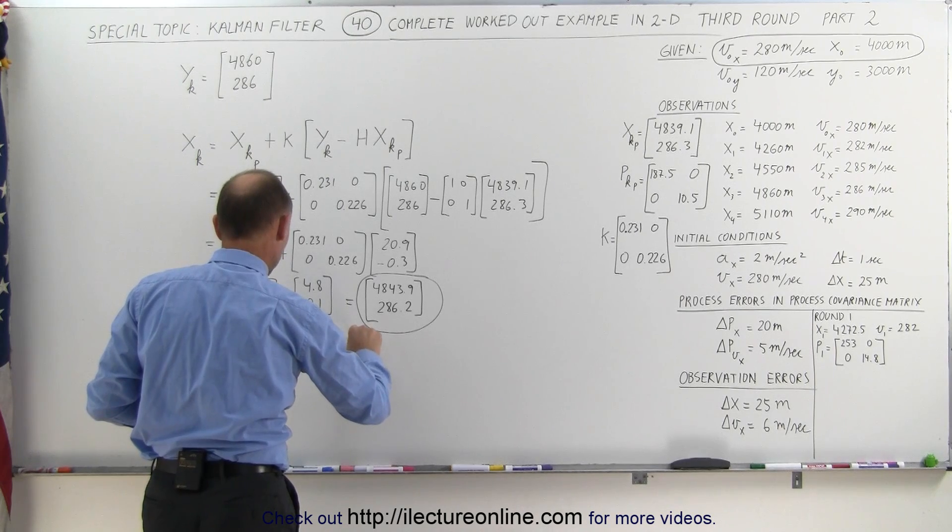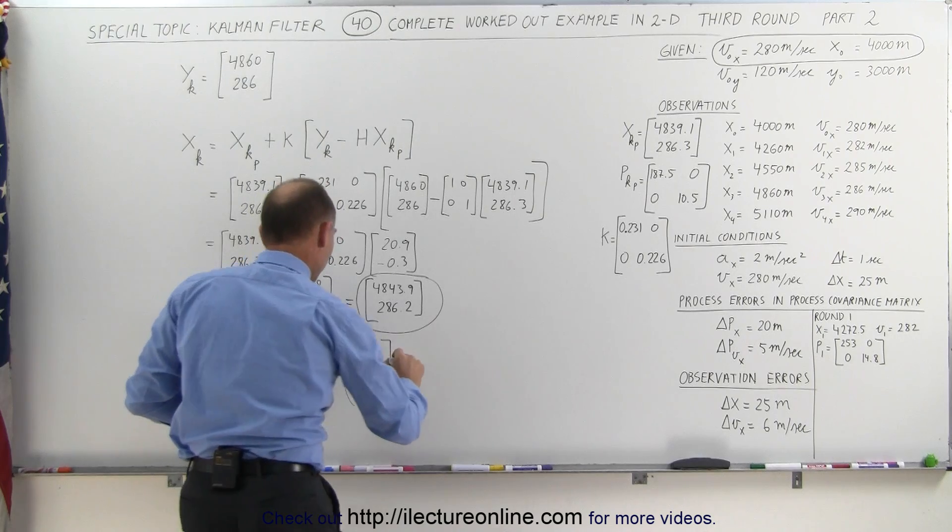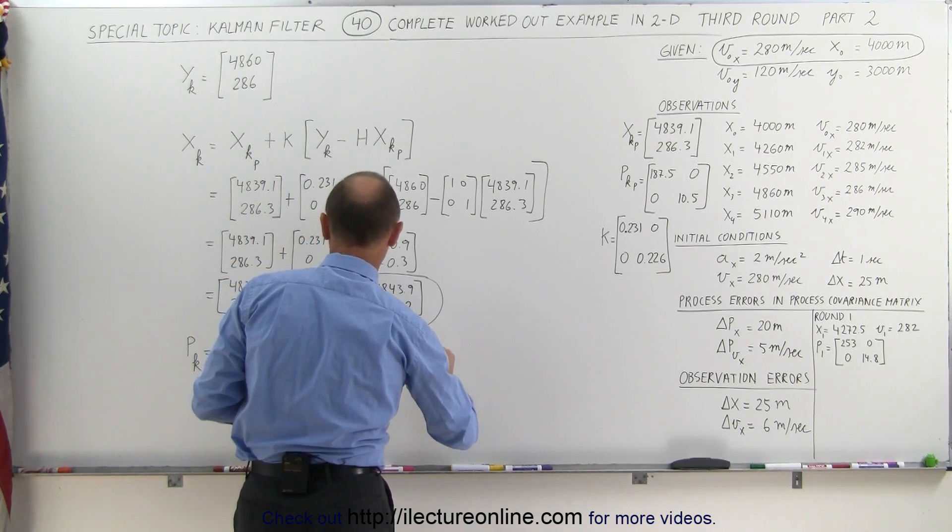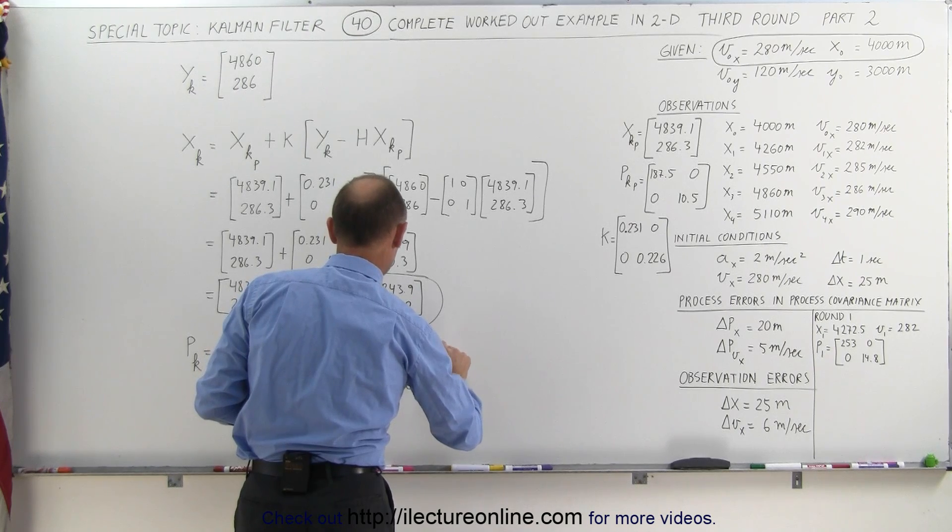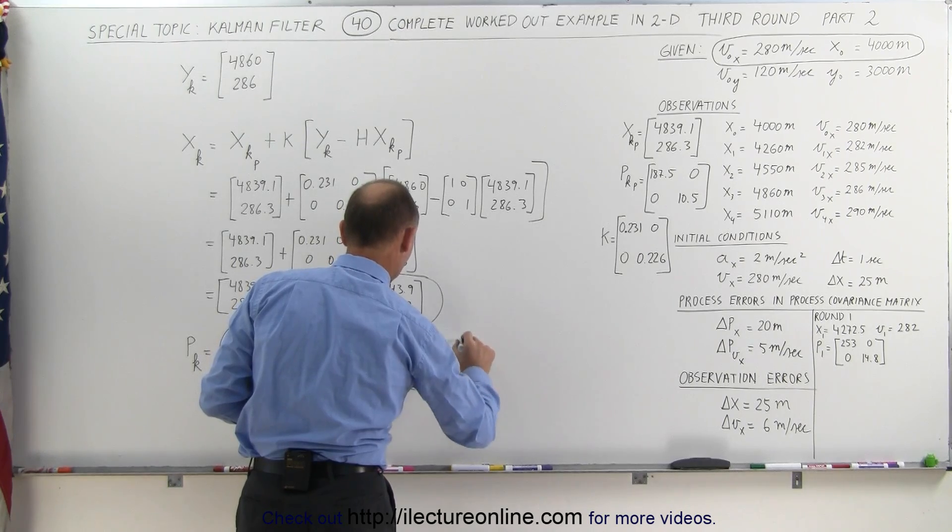This is equal to—we have the identity matrix: 1, 1, 0, 0—minus the Kalman gain. The Kalman gain is right here: 0.231, 0, 0, and 0.226.